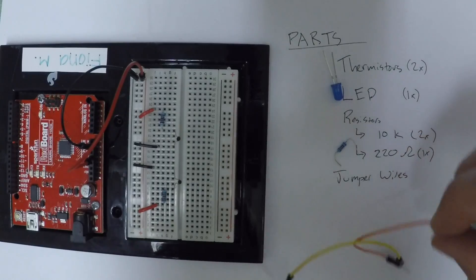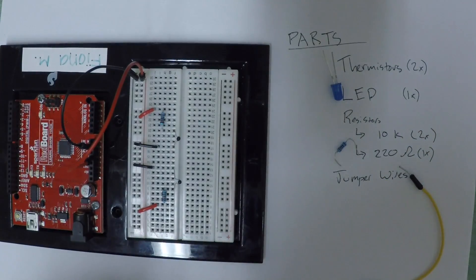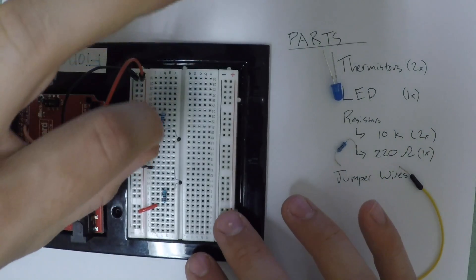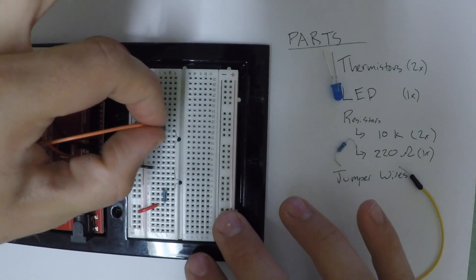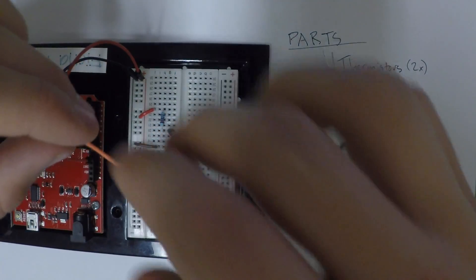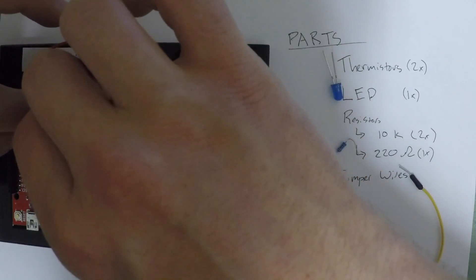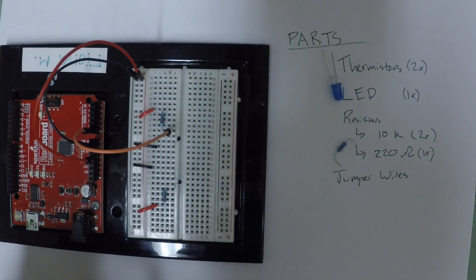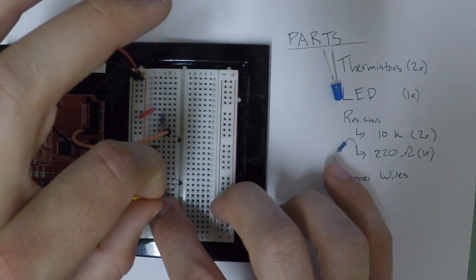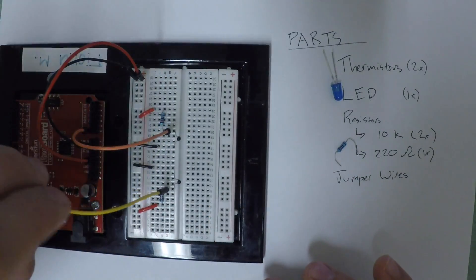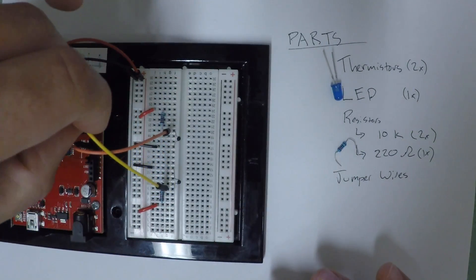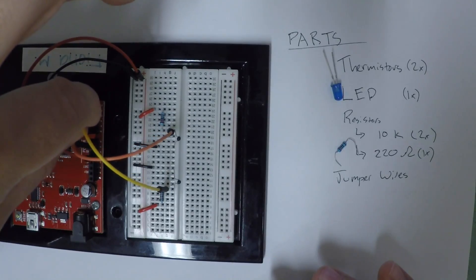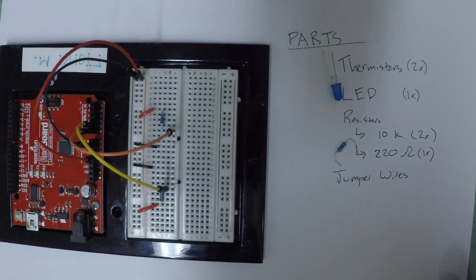And we finish these up by taking a jumper wire from between the thermistor and the resistor and connecting it to one of two, well one of five analog pins on the Arduino. In this case we're just using the analog pins A0 and A1. And then in our program we'll actually read the voltage off of these pins and the reference will be ground.